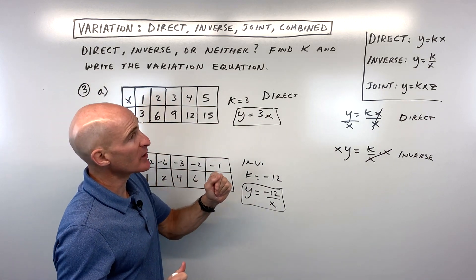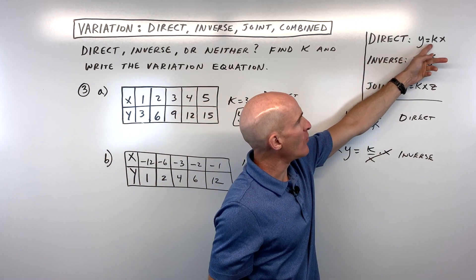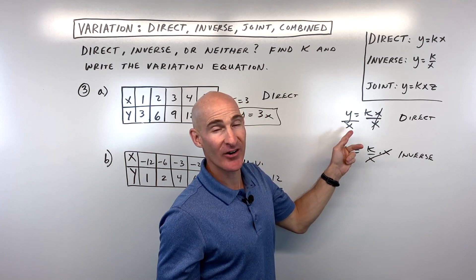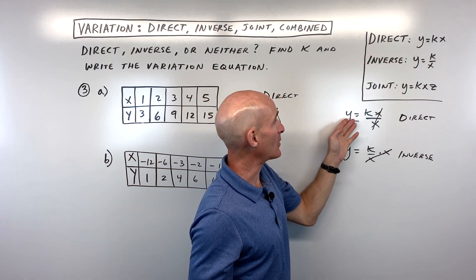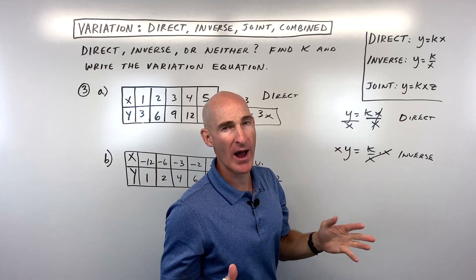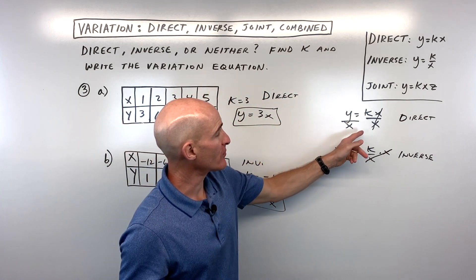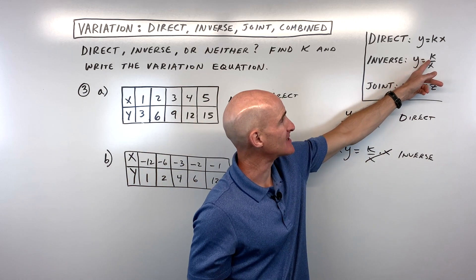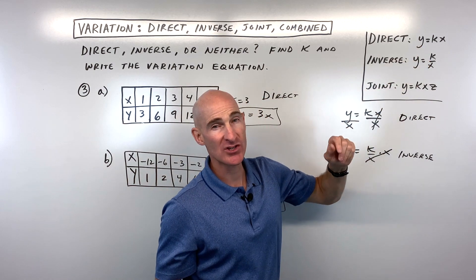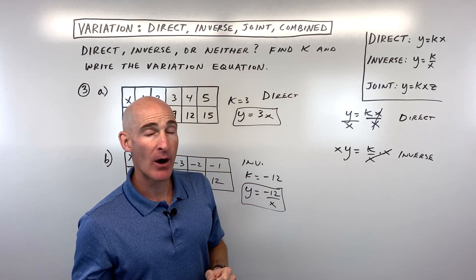Students sometimes get confused because with direct variation we're multiplying k times x, yet to find k from a table we divide. With inverse variation the equation has k divided by x, yet to find k we multiply. The reason it's the opposite is because we're solving for k — we're isolating that constant. So we had to rewrite the equations to get k by itself.